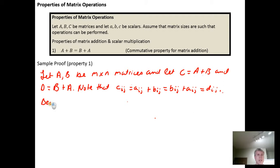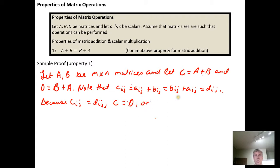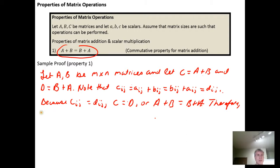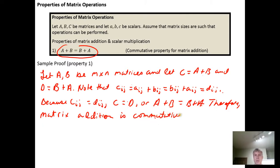Because c sub i j equals d sub i j for every arbitrary element in matrices C and D, this means that matrix C equals matrix D — or in other words, A plus B equals B plus A, which is what we wanted to show. Therefore, matrix addition is commutative. We place the tombstone symbol here to end the proof.